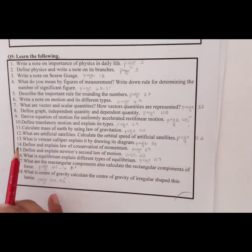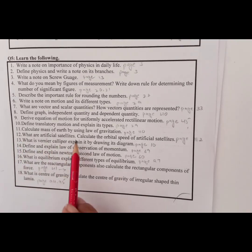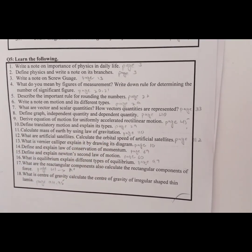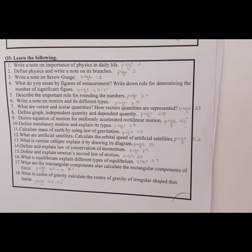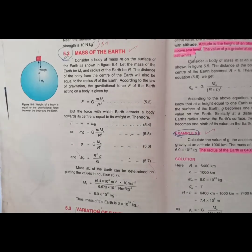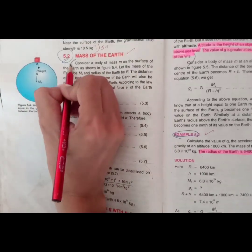Now we will move to question number 11: calculate the mass of the Earth by using the law of gravitation. Open up page number 110. On page number 110 you have the answer for the mass of the Earth.